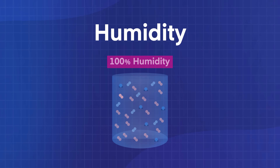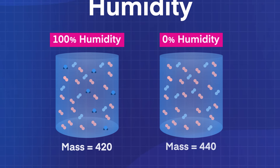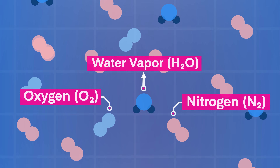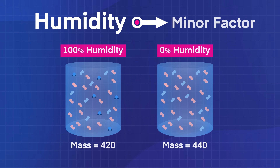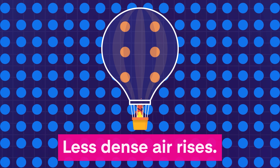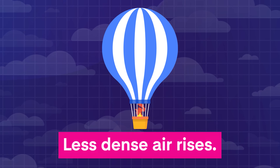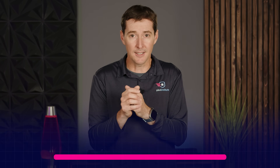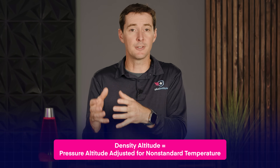Pressure is not the only thing that affects air density — humidity plays a small role. Surprisingly, humid air is slightly less dense than dry air, because water vapor molecules are lighter than the nitrogen and oxygen molecules they replace. But humidity doesn't make much of a difference. Temperature does. When air gets warm, it expands — think about a hot air balloon: heat the air inside and it becomes less dense than the cooler air around it, making the balloon rise. The hotter the air, the thinner it gets. Cold air does the opposite: it contracts and becomes denser. This is why pressure altitude alone doesn't tell the whole story about aircraft performance.